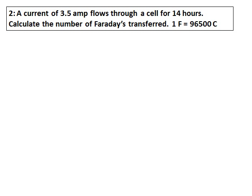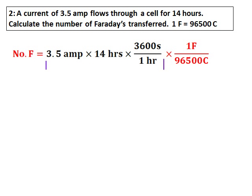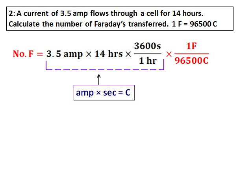A current of 3.5 amperes flows through a cell for 14 hours. Calculate the number of Faradays transferred, given that 1 Faraday equals 96500 coulombs. The number of Faradays is calculated by multiplying the current in amperes by the time converted to seconds, giving charge in coulombs, and then multiplying by the relation between Faradays and coulombs to get the answer in Faradays.